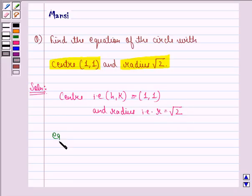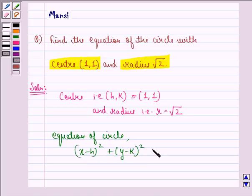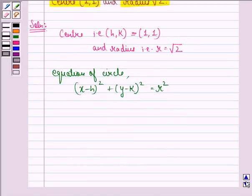Now we know that equation of a circle with center (h,k) and radius r is given by (x-h)² + (y-k)² = r². Now we simply put in the values of h, k, and r in this equation.